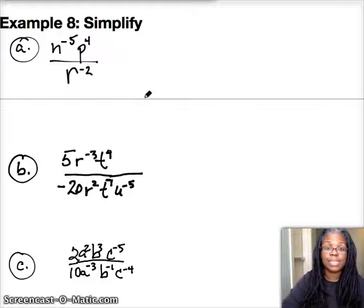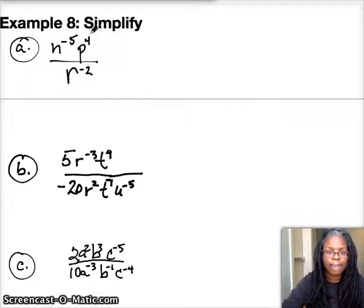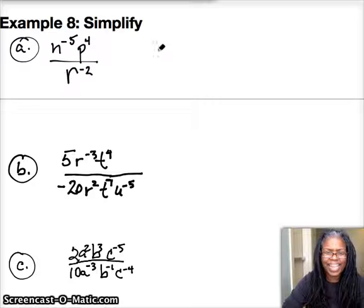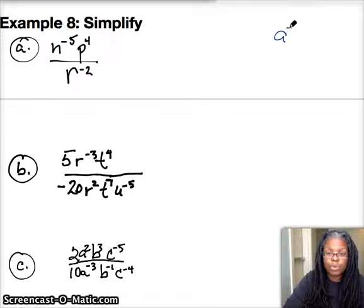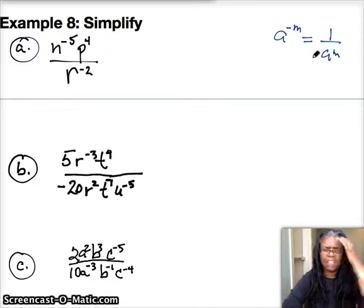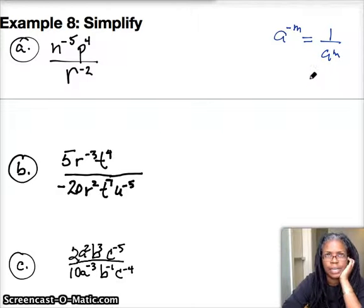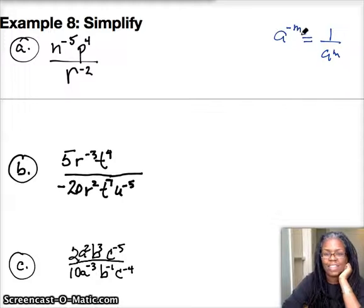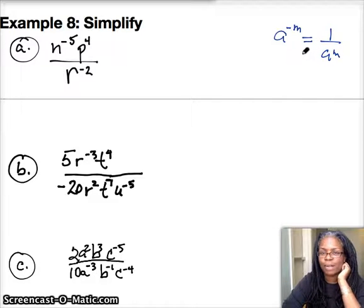Alright, we're moving along at a great clip. Example 8: we're going to simplify. Remember this rule: a to the negative m equals 1 over a to the m. I mentioned something about how when you have a negative exponent it flips — I'm going to tell you why I said that before we attack this problem.